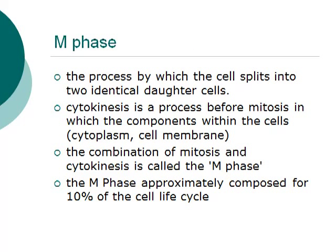Let's start with the M phase. The M phase is the process by which the cell splits into two identical daughter cells. Cytokinesis is a process in which the components within the cells, such as cytoplasm and the cell membrane, divides. The combination of mitosis and cytokinesis is called the M phase. The M phase approximately accounts for 10% of the cell life cycle.